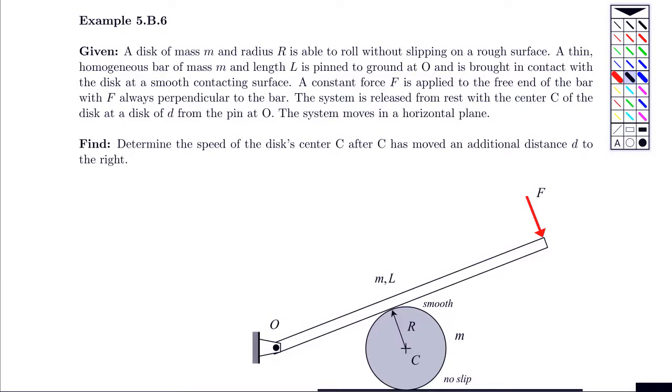In this problem we have two rigid bodies: bar OA (I'm going to label this at point A) and the disc.